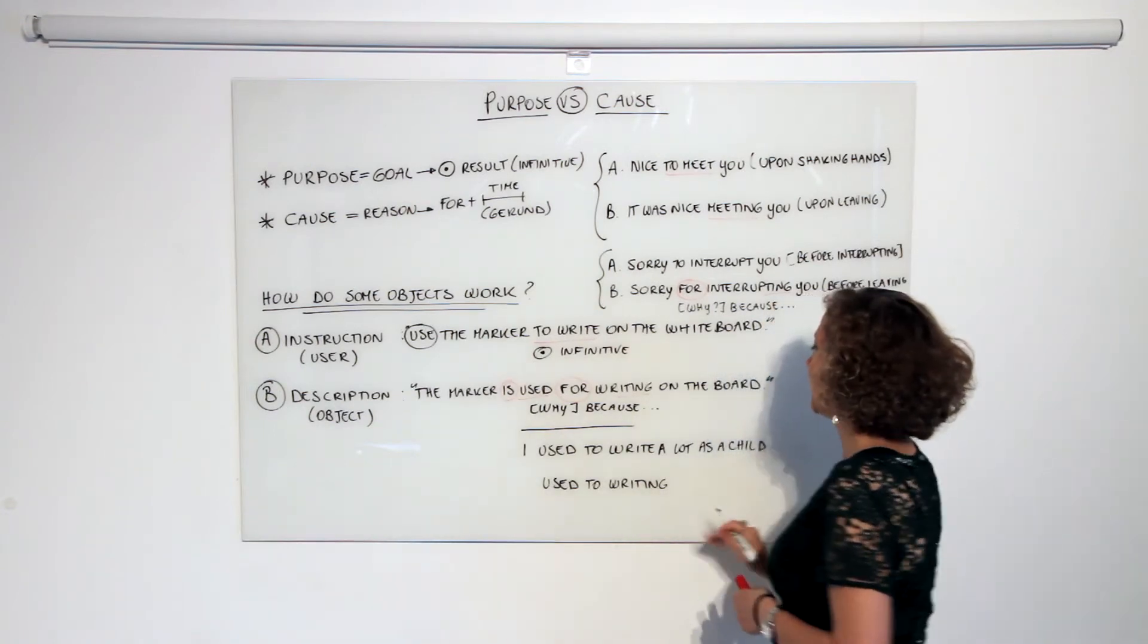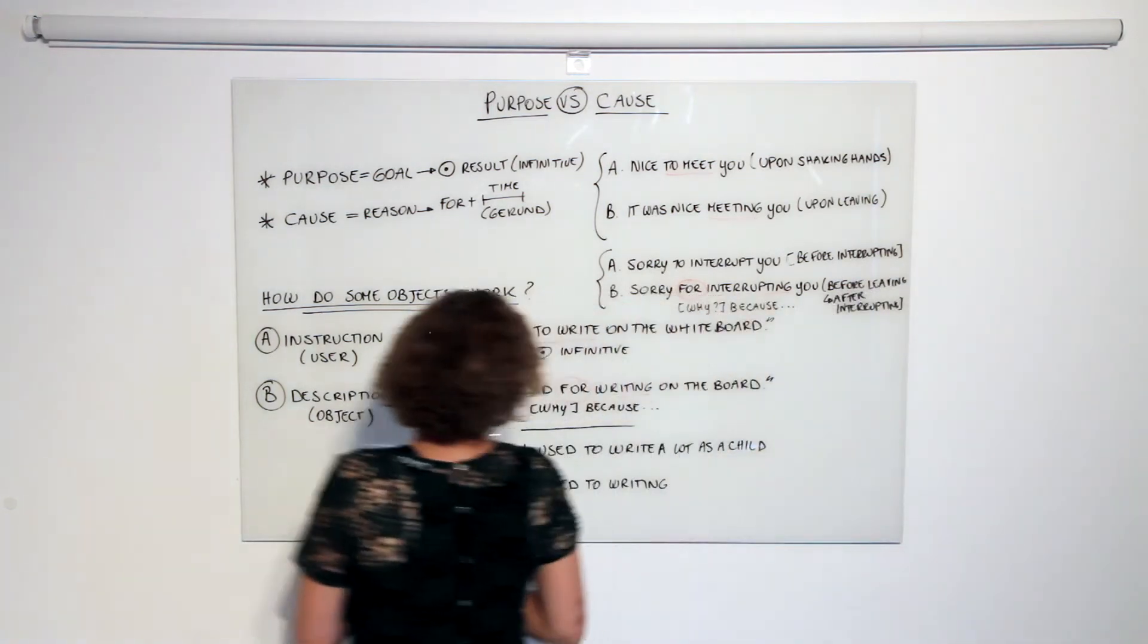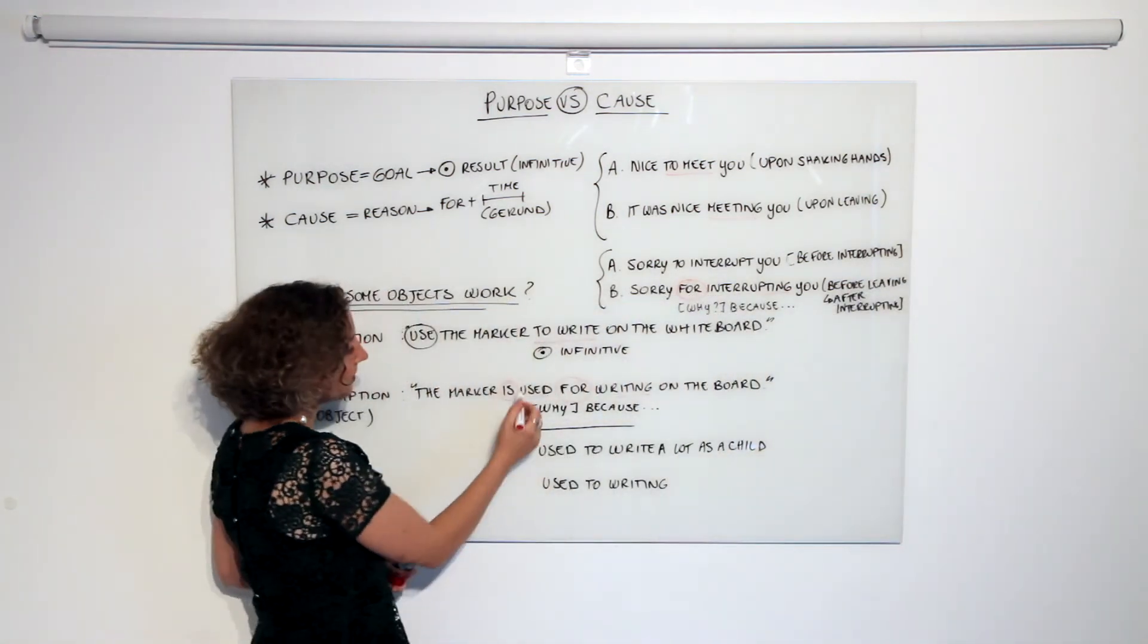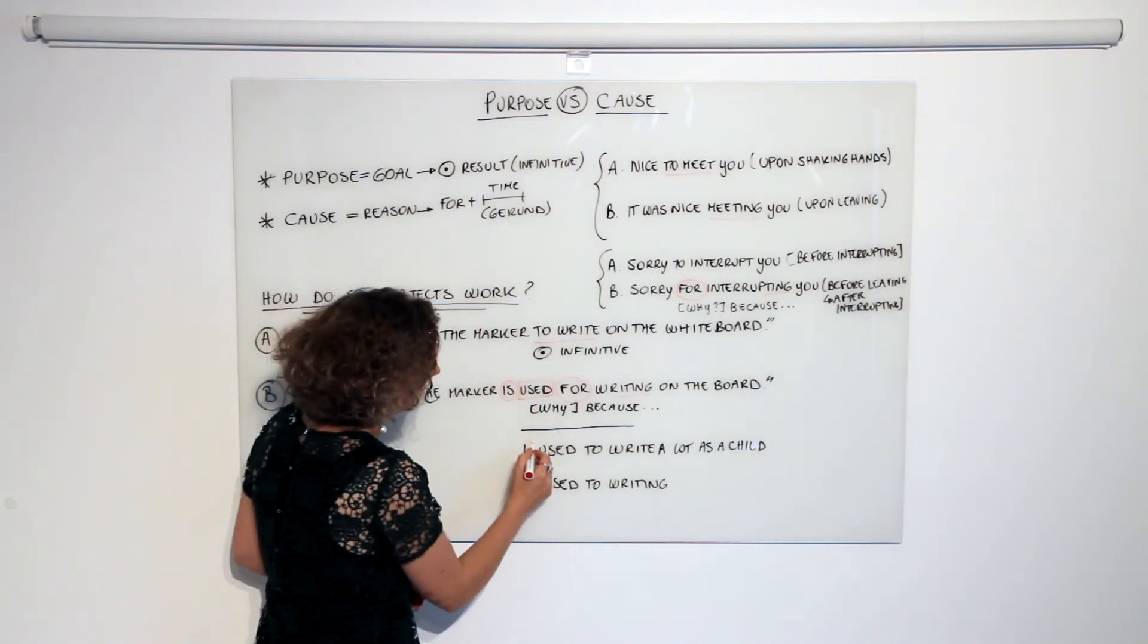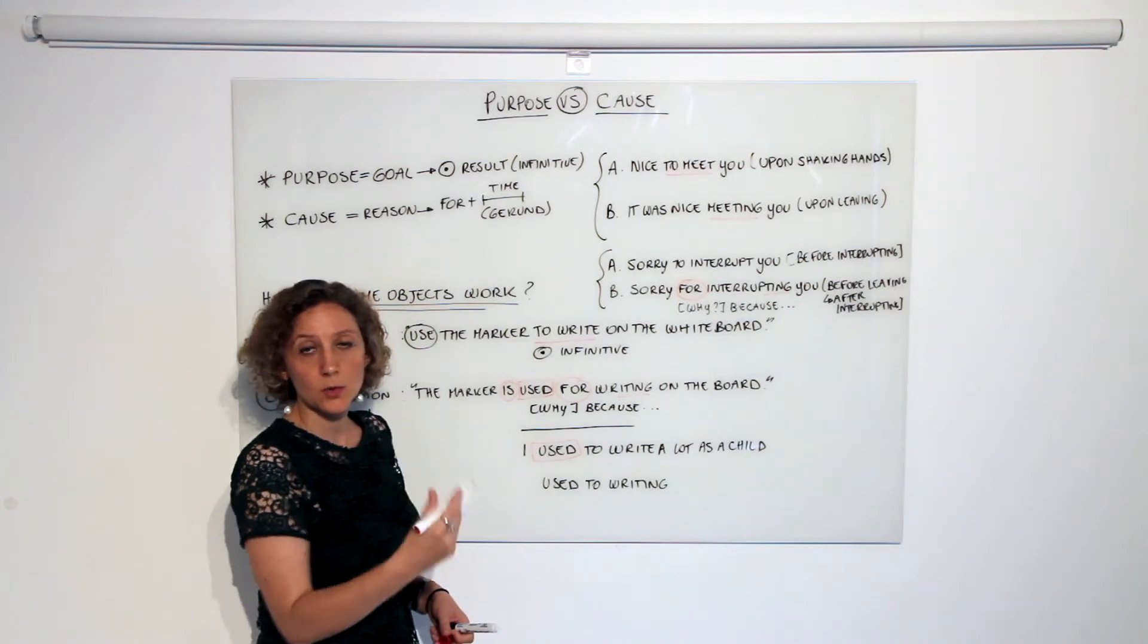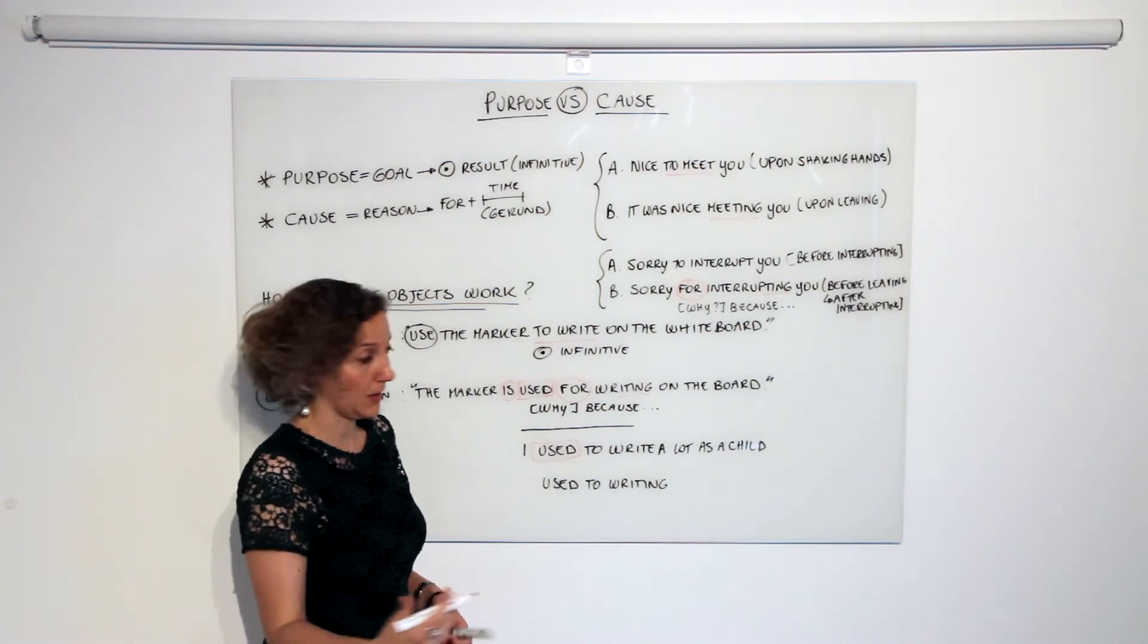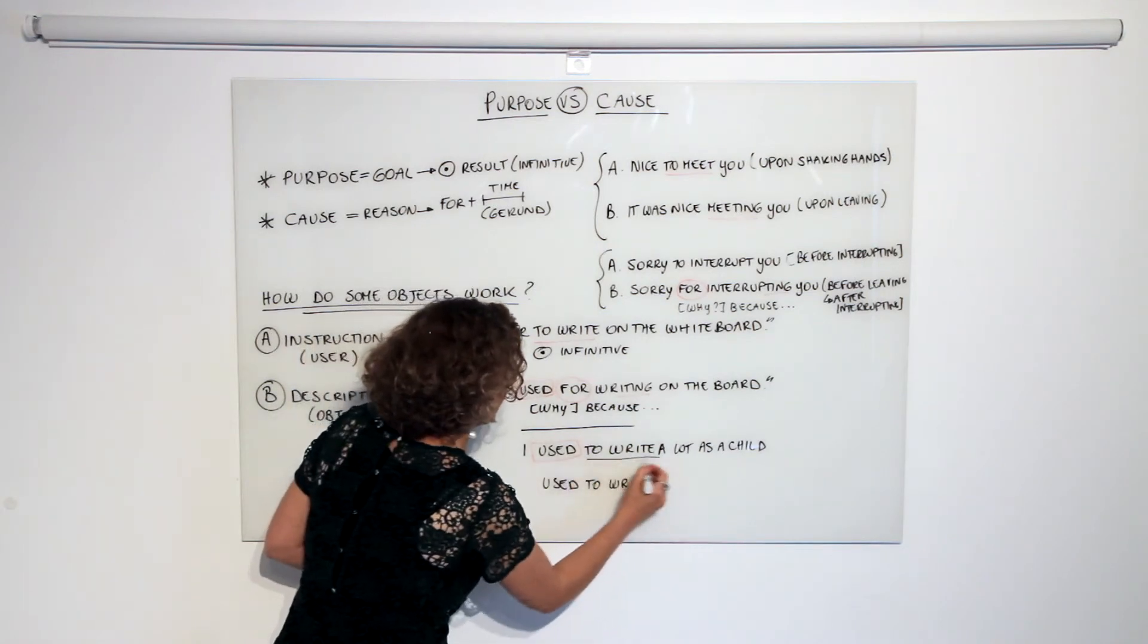Meaning I used to write a lot in my childhood. Now this is completely different - this is a past participle 'used' here, this is a defective verb in the past form which expresses a habit in the past, and this is followed by the infinitive.